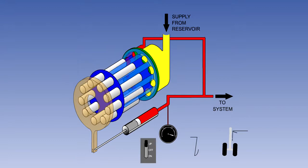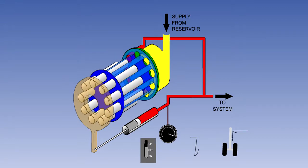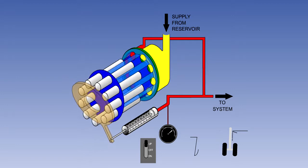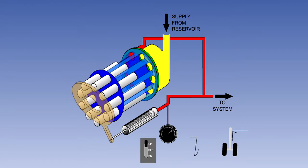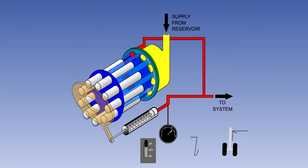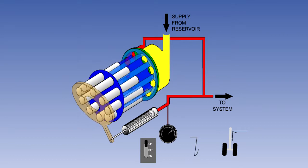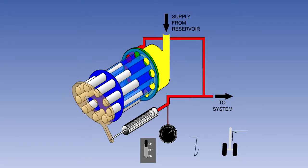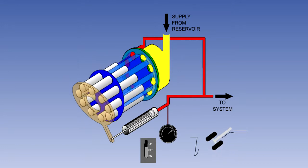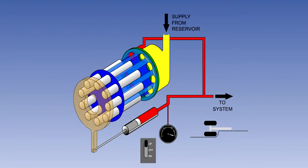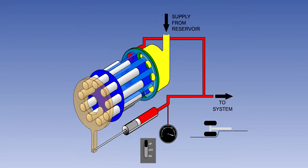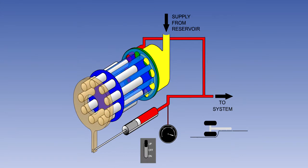If a service is operated, the system pressure will fall, the spring will push the control piston to the right, increasing the swash plate angle and thus the piston stroke. Pump output will increase to maintain the pressure. When the service reaches its required position, output pressure will again rise, and the swash plate will return to its no-load position.